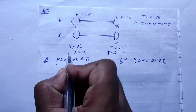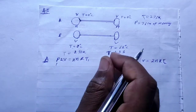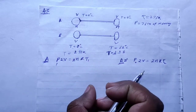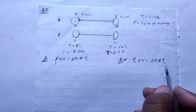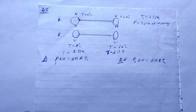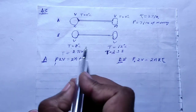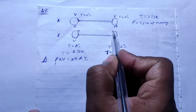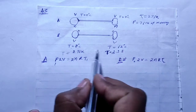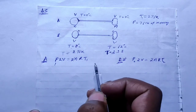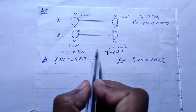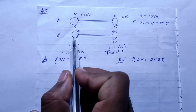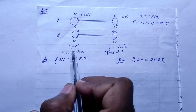Now we need to find the combined temperature. Since both volumes and number of moles are the same, we combine them. The bulb at higher temperature is supplying heat, and the other bulb is receiving heat.